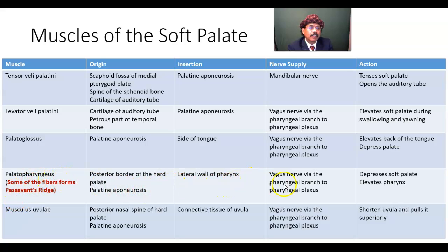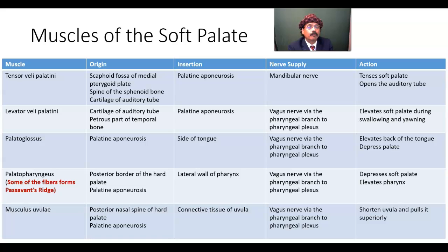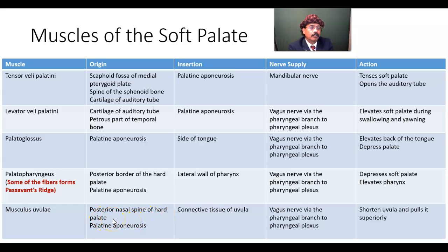The palatopharyngeus muscle — nerve supply is the vagus nerve via the pharyngeal branch to the pharyngeal plexus. The musculus uvulae has the same nerve supply; it shortens the uvula and pulls it superiorly. Importantly, some of the upper fibers of the palatopharyngeus go to the pharynx on the inner aspect of the superior constrictor muscle and form a type of sphincter — these fibers are called Passavant's ridge. The musculus uvulae takes origin from the nasal spine of the hard palate, covered by the fibers of the palatine aponeurosis, and blends with the connective tissue of the uvula.